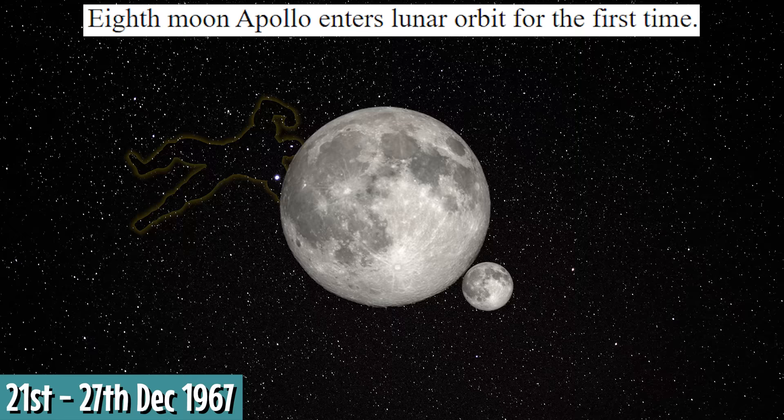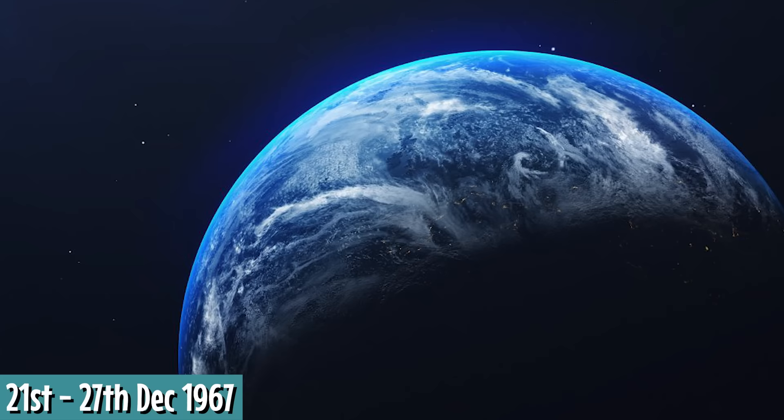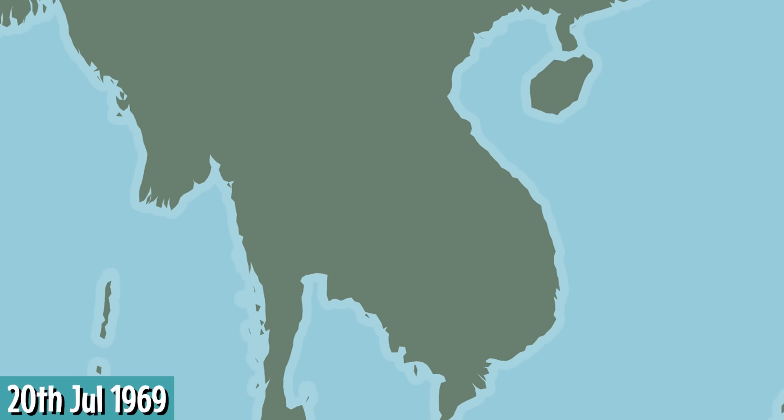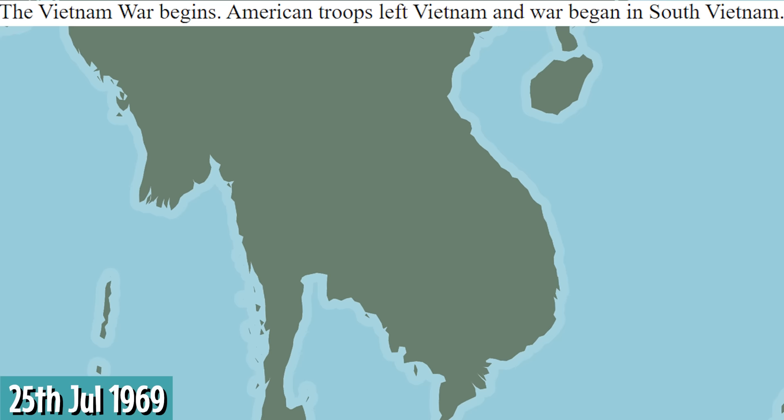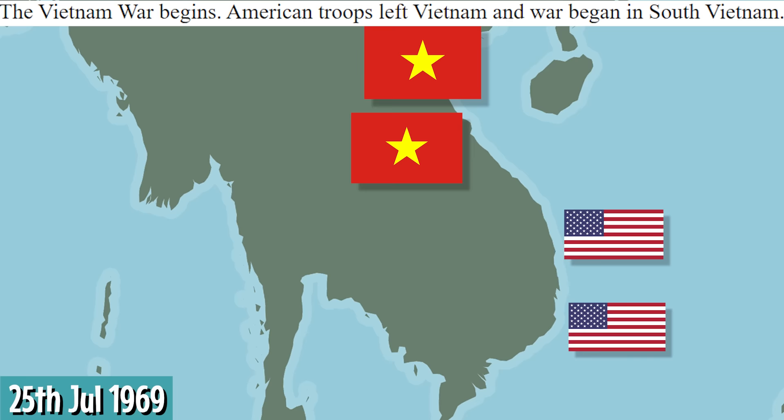Pick one. The 21st to the 27th of December: Eighth moon Apollo enters lunar orbit for the first time. He made 10 orbits before returning to Earth, but never landed on the moon. He has become like supernaturally powerful now. He was powerful before, but he wasn't orbiting-the-Earth powerful. He arrived in the United States from New Armstrong Airport on July 20th. July 25th: the Vietnam War begins. American troops left Vietnam and war began in South Vietnam.